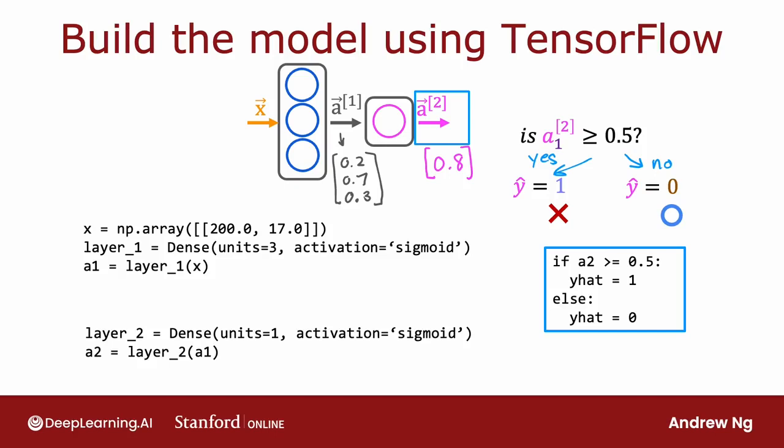There are some additional details that I didn't go over here, such as how to load the TensorFlow library, and how to also load the parameters w and b of the neural network. But we'll go over that in the lab. So please be sure to take a look at the lab. But these are the key steps for forward propagation and how you compute a1 and a2 and optionally threshold a2.